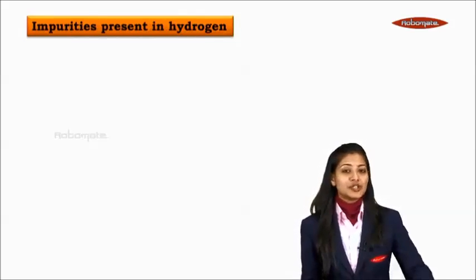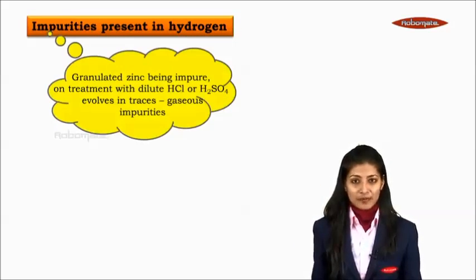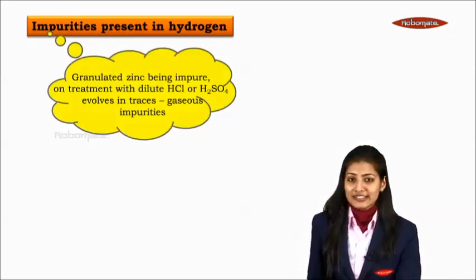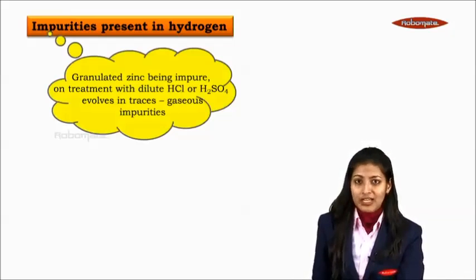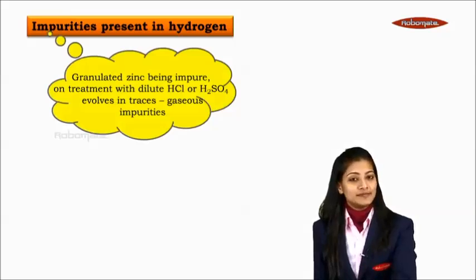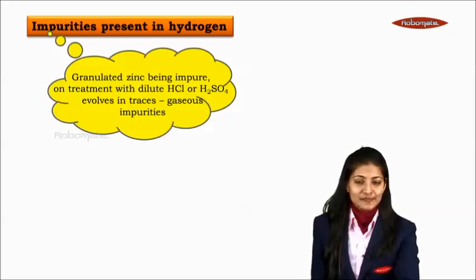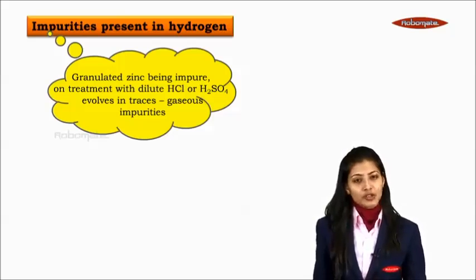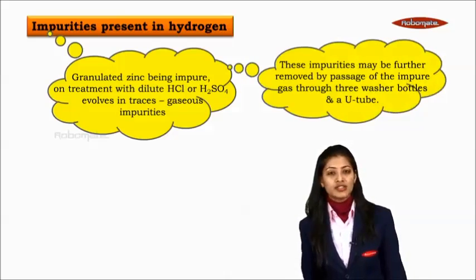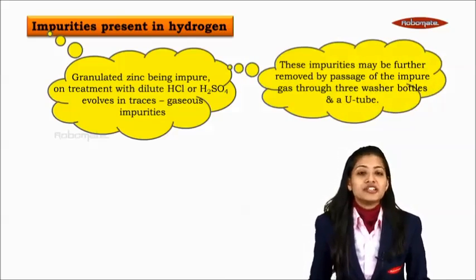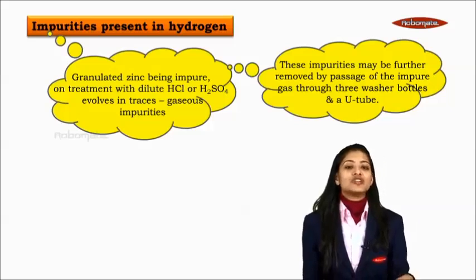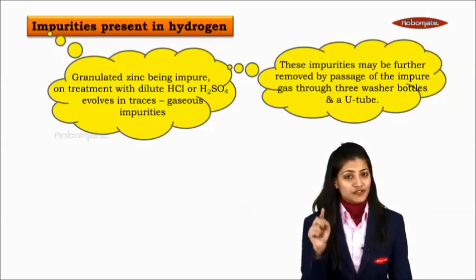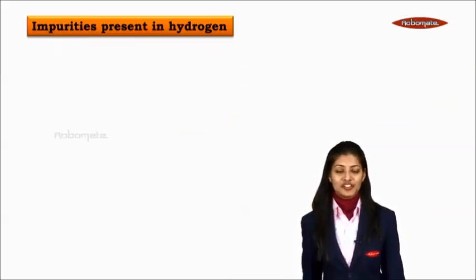Now impurities which are present in hydrogen. Where do these impurities arise from? Granulated zinc being impure on treatment with dilute HCl or dilute sulfuric acid evolves in traces gaseous impurities. What are those gaseous impurities? These impurities may be further removed by passage of the impure gas through three washer bottles and a U tube. But first, let us understand those impurities.